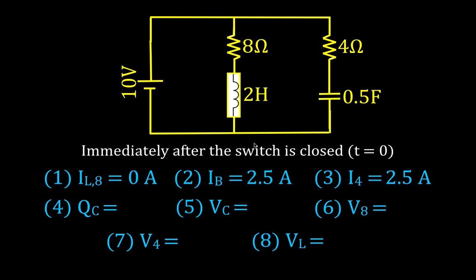Immediately after the switch has been closed, what is the charge on the capacitor? It takes time for charge to build up on a capacitor, so immediately after the switch closes, there's no charge built up on the capacitor. And if there's no charge, there's no voltage across the capacitor. Similarly, there's no current through the 8-ohm resistor, so the voltage across it is zero.